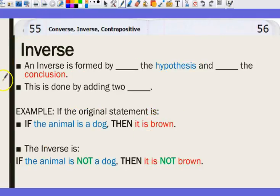We're going to work on inverses. You should write this part down and you should write this part down. Before I fill in these blanks I want you to look at the difference between the original statement and an inverse. What do you guys notice is different? There's two things different, there's two specific words. The two nots. There's a not and it's also not in the conclusion. So the inverse is formed by negating the hypothesis and negating the conclusion. This is done by adding two nots.